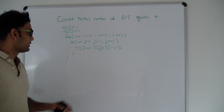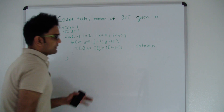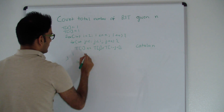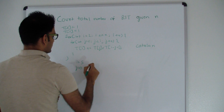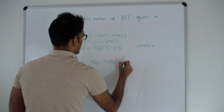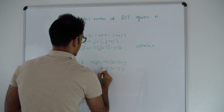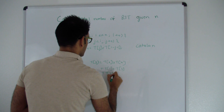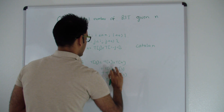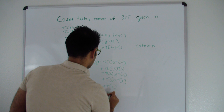This formula calculates the Catalan number. To verify for i=5: T(5) = T(0)×T(4) + T(1)×T(3) + T(2)×T(2) + T(3)×T(1) + T(4)×T(0), which comes out to 42. This confirms our earlier calculation is correct.